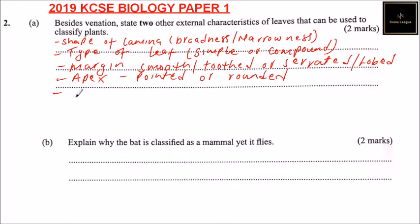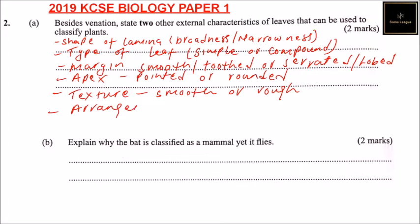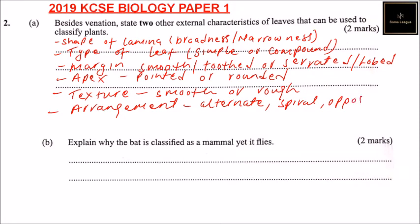The other one is texture — texture, so it may be smooth or rough. The other characteristic is arrangement — that is the way they are arranged on the stem or the branch. They may be alternate, they may be spiral, they may be opposite, or whorled.